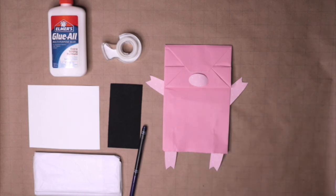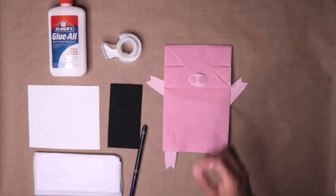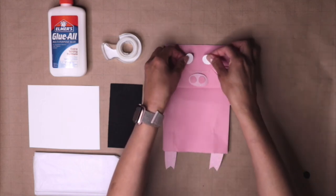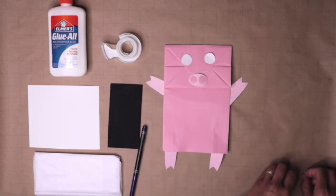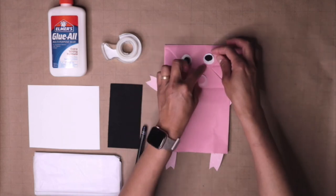And then attach the snout with glue or tape. For the nostrils, I cut out two pink circles. I also cut out two white circles for the eyes and two small black circles for the pupils. These are the smaller circles within the eyes.